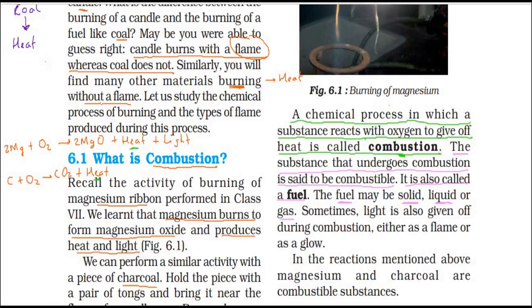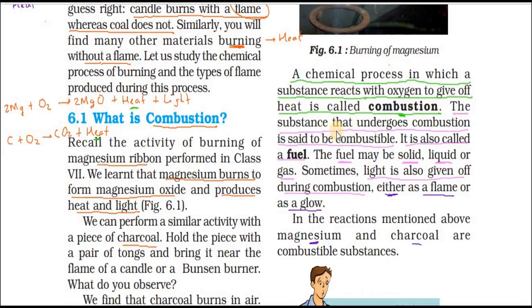The light produced during combustion can be either as a flame or as a glow. A candle will burn with a flame. When you heat charcoal or coal, it gives a glow — heat plus a glow, but not a flame. So in the reactions mentioned above, magnesium and charcoal are both combustible substances because they react with oxygen to give out heat.